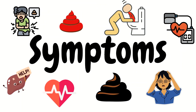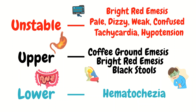Now let's talk about symptoms. The classic symptoms of an upper GI bleed include bright red emesis or coffee ground emesis, as well as black stools. For lower GI bleeding, you have red bloody stools. But in the ER, we must spring into action when we note symptoms of an unstable patient — an unstable GI bleed. These symptoms include bright red emesis or bright red stools, and the patient is pale, dizzy, weak, confused, and getting altered. They're also tachycardic and hypotensive. These signs show that your patient is starting to go into shock and you have to act quickly.